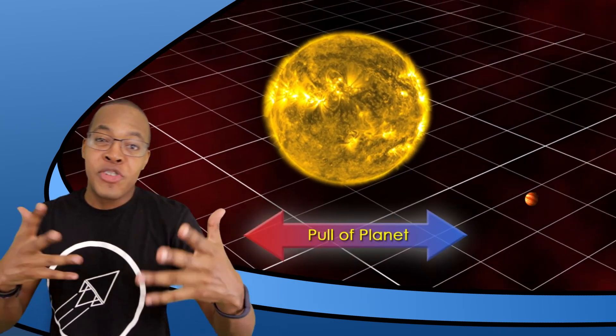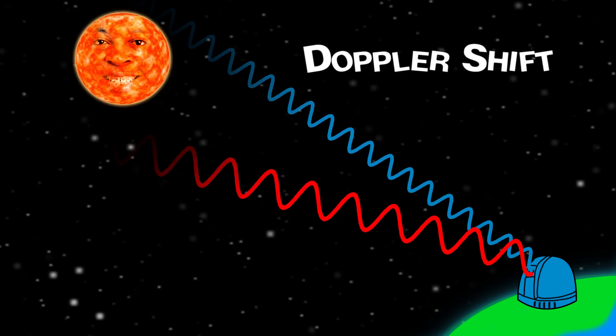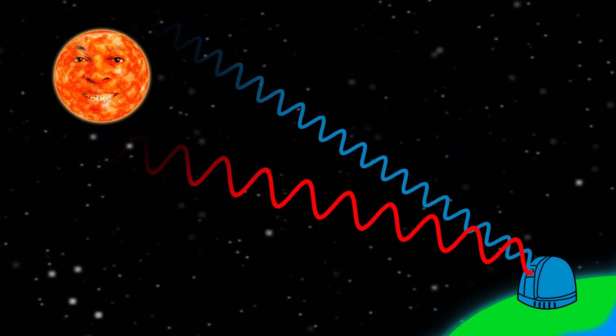Otto Struve in 1952 proposed that huge planets like Jupiter could make their stars move. Doppler shift, red and blue—information could be used. Then we see that extrasolar planets are more than a few.